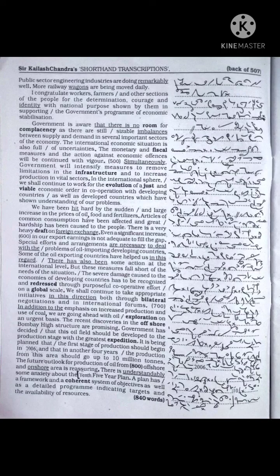In addition to the emphasis on increased production and use of coal, we are going ahead with oil exploration on an urgent basis. The recent discoveries in the offshore Bombay High structure are promising. Government has decided that this oil field should be developed to the production stage with the greatest expedition. It is being planned that the first stage of production should begin in 2006 and that in another four years, the production from this area should go up to 10 million tons. The future outlook for production of oil from offshore and onshore areas is reassuring.